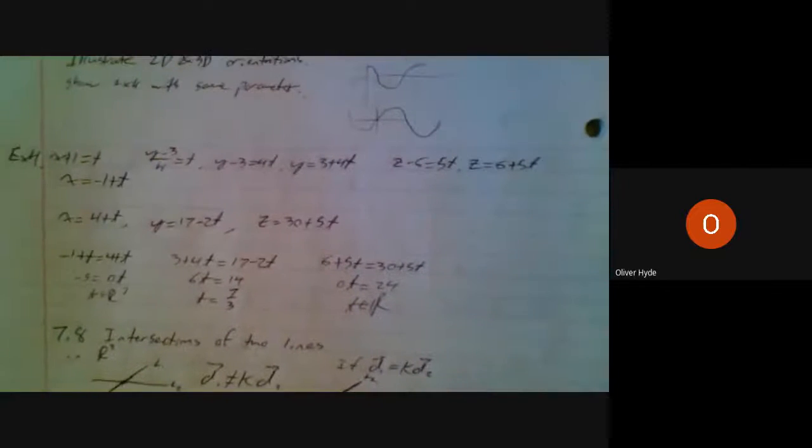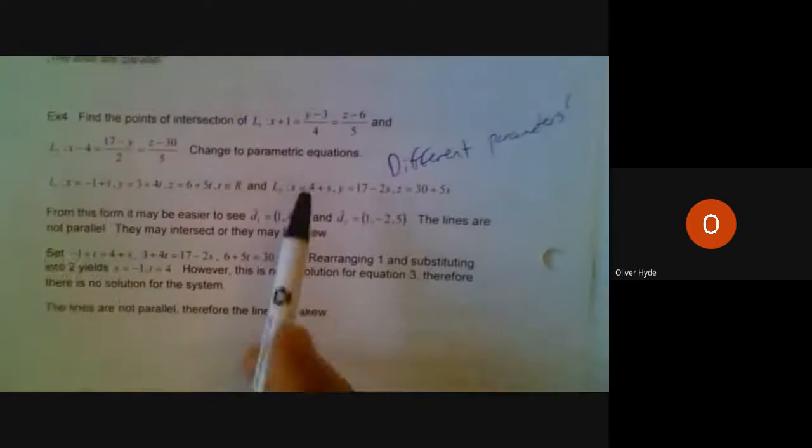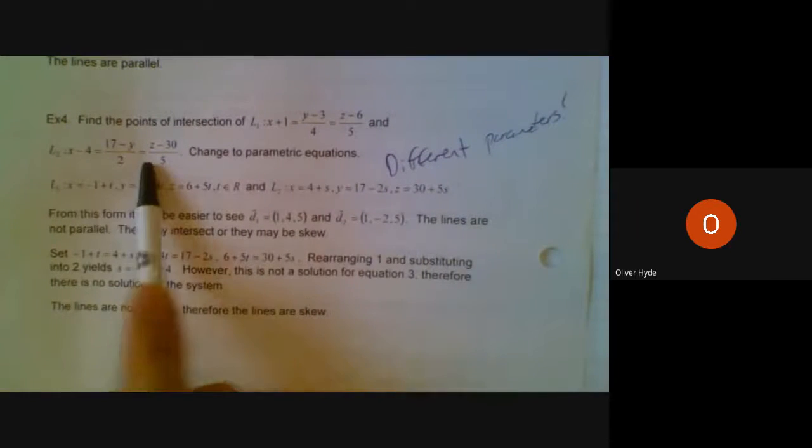The second thing that I want to do is maybe just quickly go through, and I'll go through a pre-printed example here. Example number four, what if we accidentally used the same parameters? So from example number four, I had where, let's see, here's the one line and here's the other line.